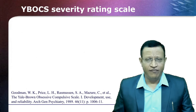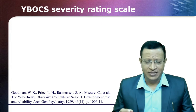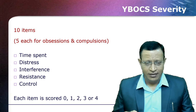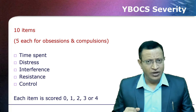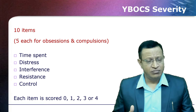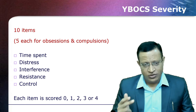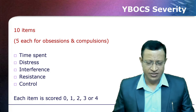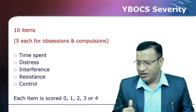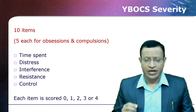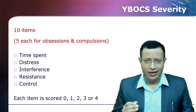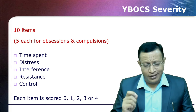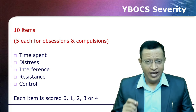Moving to the Y-BOCS Severity Rating Scale — a very important rating scale available free of cost. Please use it even in the clinical setting. There are ten items: five for obsessions and five for compulsions. Before administering, although it is patient self-administered in other countries, in India it has to be administered by the clinician. You need to clearly educate the patient on the meaning of obsession and compulsion. Once the patient has understood, then use the Y-BOCS Severity Rating Scale.